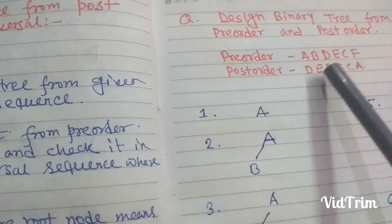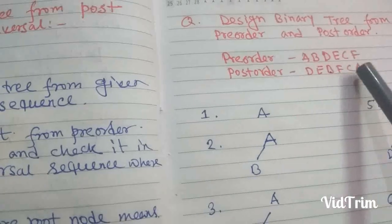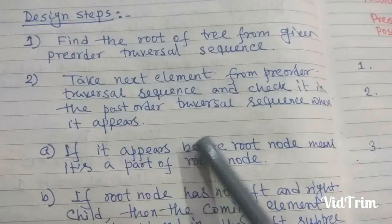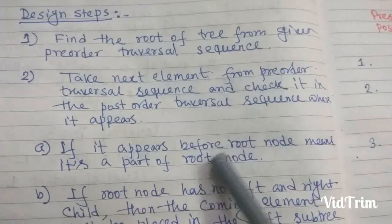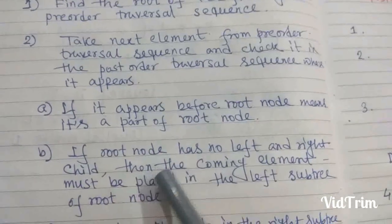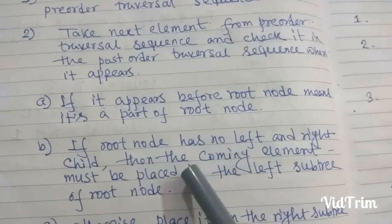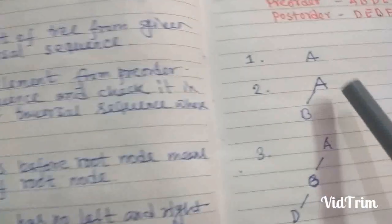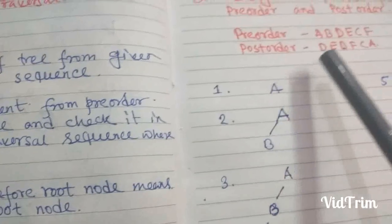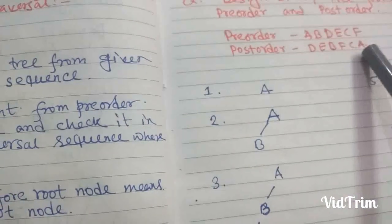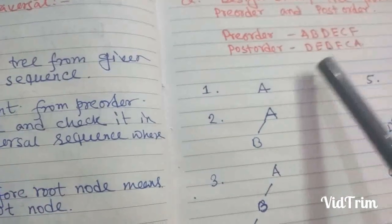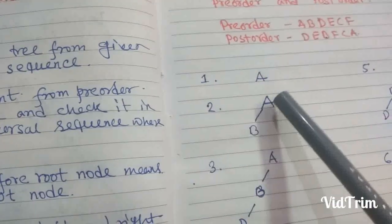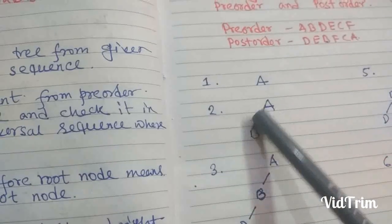Since B appears before A in the post-order sequence, B is a part of the root node A. A has no left or right child, so the coming element must be placed in the left subtree of the root node. Therefore, we place B in the left subtree of A.